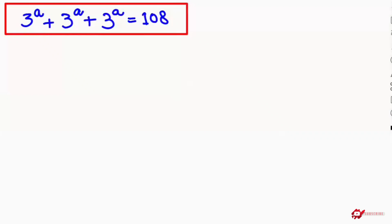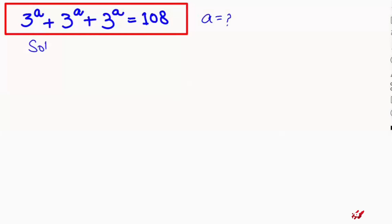Hi everyone, I'm going to solve this nice exponential equation. The equation we have is 3 to the power of a, plus 3 to the power of a, plus 3 to the power of a, equals 108. Here we need to find out the value of a. Let's start the solution.